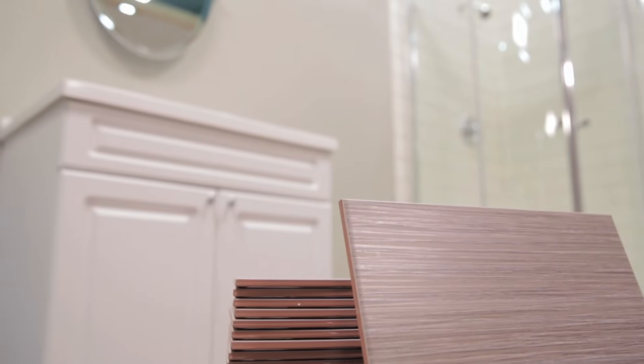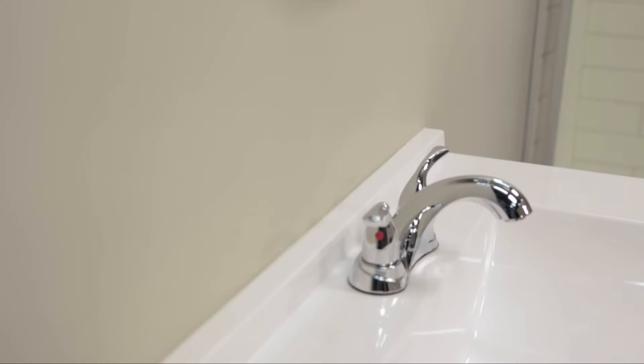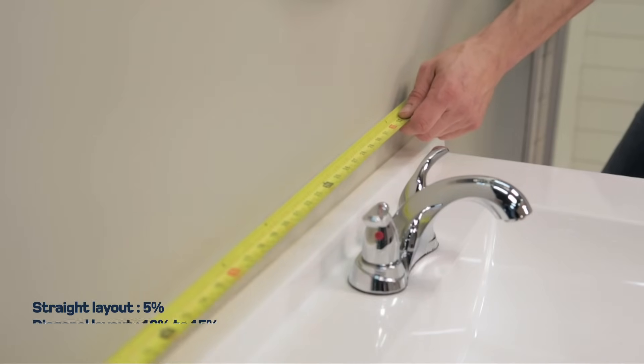To purchase wall tiles, calculate the surface area to cover and add a percentage to allow for breakages and spares. Add 5% for tiles laid out in straight lines and 10-15% for a diagonal layout.